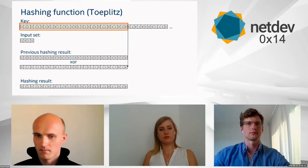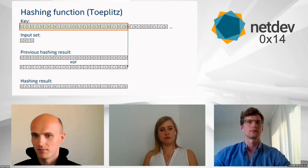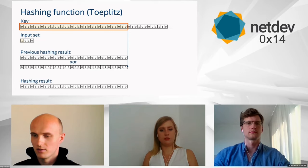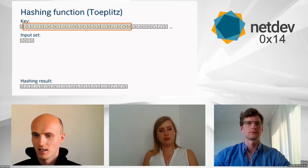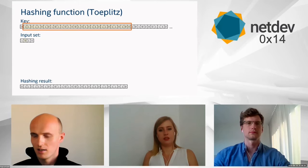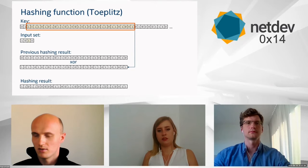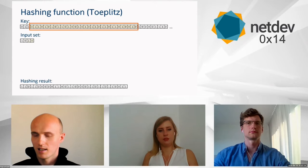As a first step, we mask the 32 most significant bits of the key and check the input bit — in this case it's one — so we XOR the previous hash result with the masked key and save that value. In the second step, we shift the key left; the input bit is zero, so we take no action. For the third input bit of one, we again XOR the previous hash result with the masked key, giving us an updated result.